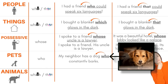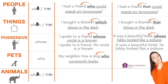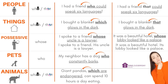My neighbor has a dog who constantly barks — so annoying. Yes, sometimes for pets we do use which or that. Giant pandas, which are endangered, can spend 10 hours a day eating. Animals that have hair or fur are called mammals.